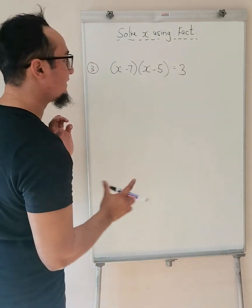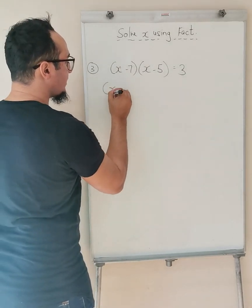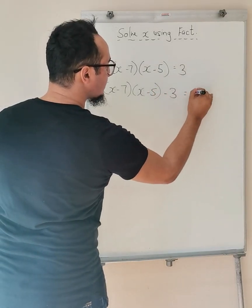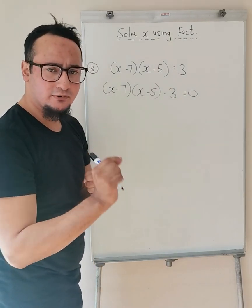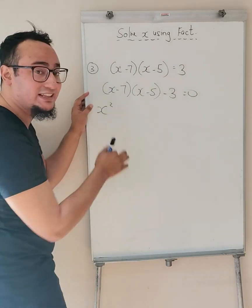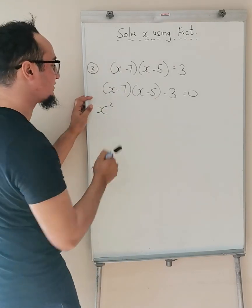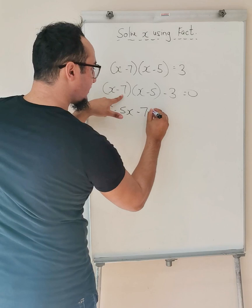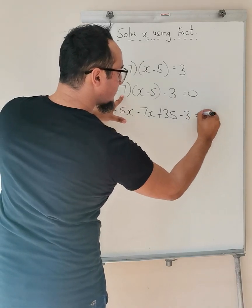In example number 3, what's my first objective? Make sure that my equation is equal to zero. So X minus 7, X minus 5, minus 3 is equal to zero. Next, multiply out, add like terms, and see which type of factorization will appear. X times X is X squared. Notice I have that square, meaning the degree of the expression is 2, meaning that there are 2 X values. These two, negative 5X, those two, negative 7X, and plus 35 minus 3 is equal to zero.